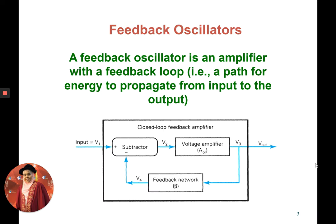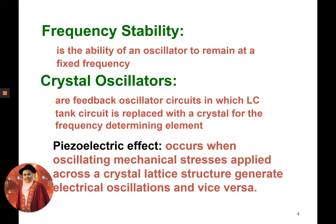Another type of oscillator is called a feedback oscillator. It is an amplifier with a feedback loop that has a path for energy to propagate from input to output. It has a subtractor, a voltage amplifier, and also a feedback network. This type of feedback oscillator is used to produce high frequency stability.